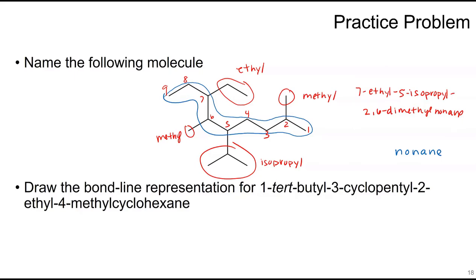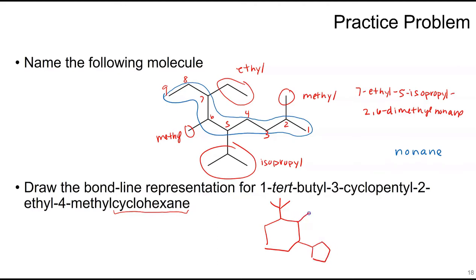Now draw the bond-line representation for 1-tert-butyl-3-cyclopentyl-2-ethyl-4-methylcyclohexane. Start with the parent cyclohexane, then build off it: at position one add a tert-butyl (turkey claw), at position three add a cyclopentyl (five-membered ring), at position two add an ethyl, and at position four add a methyl.